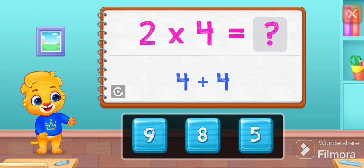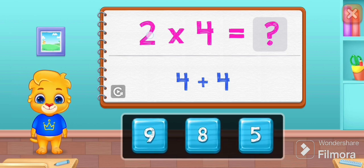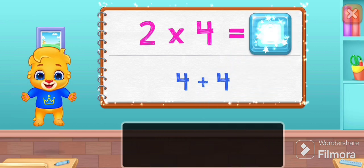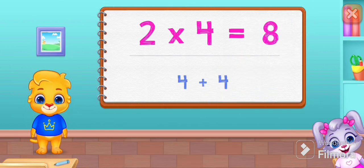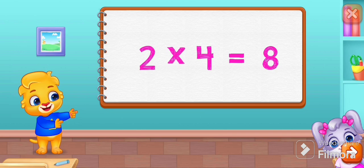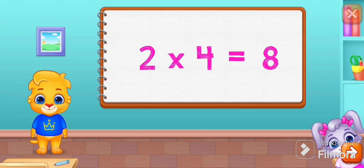Two times four equals four plus four plus eight. Two times four equals eight.